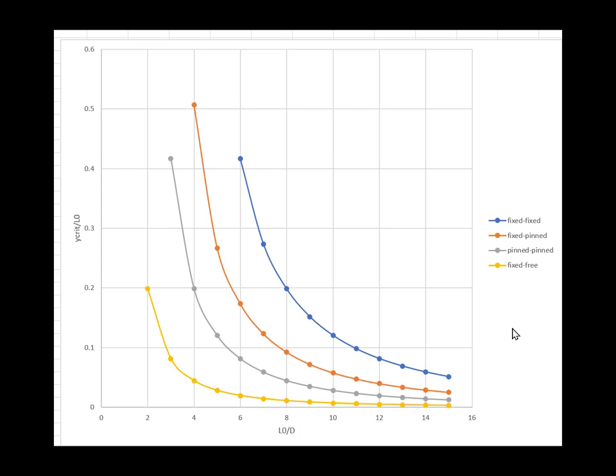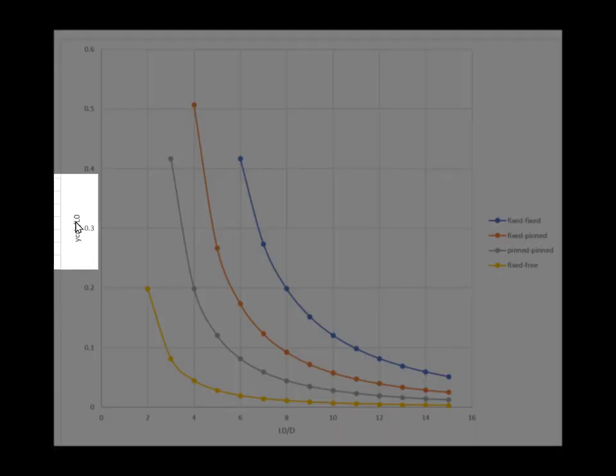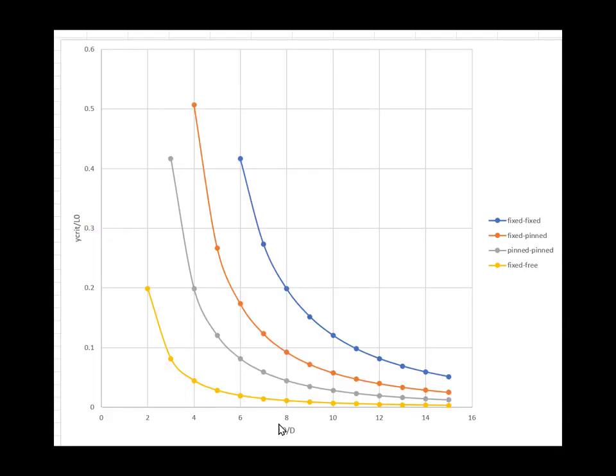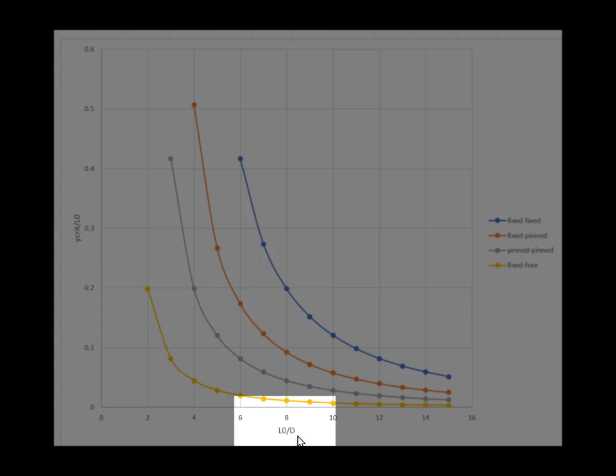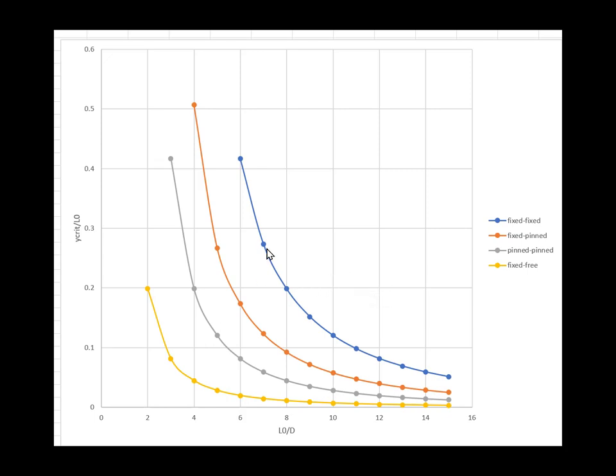I have taken that critical buckling deformation, Y-crit, normalized by the undeformed length of the spring, and plotted that against the normalized undeformed length divided by the coil diameter for different end conditions. The blue line is fixed-fixed, the orange line is fixed-pin, the gray line is pinned-pinned, and the yellow line is fixed-free. For each end condition, slenderness ratios to the right of that line would buckle, and to the left would not buckle. This is called a wall-buckling map.